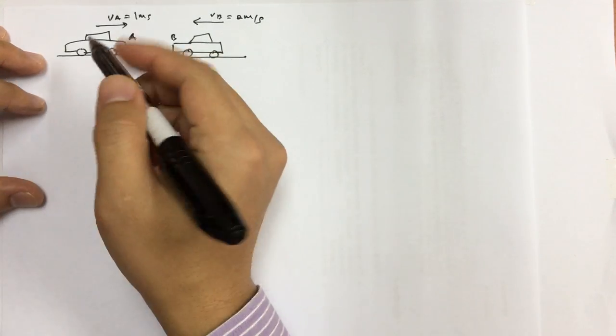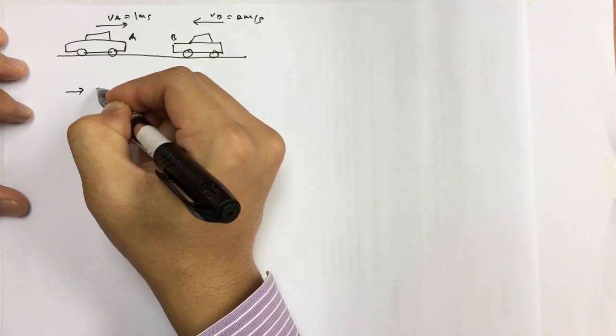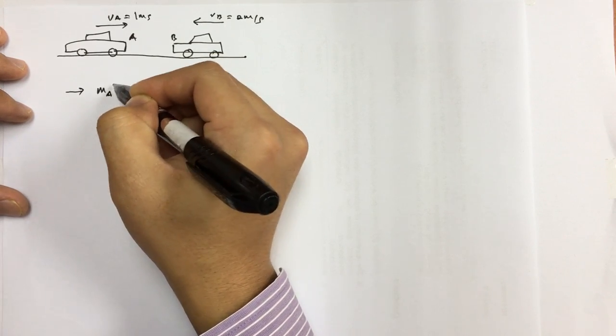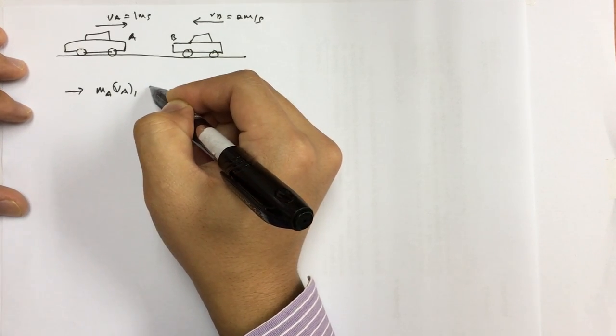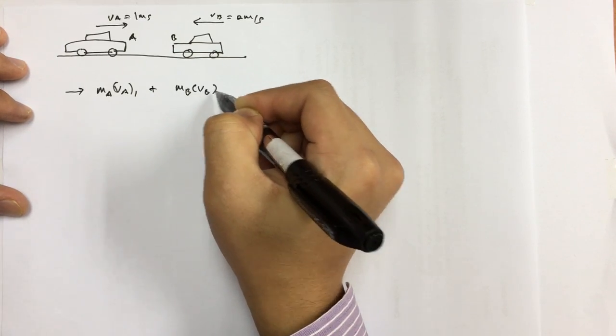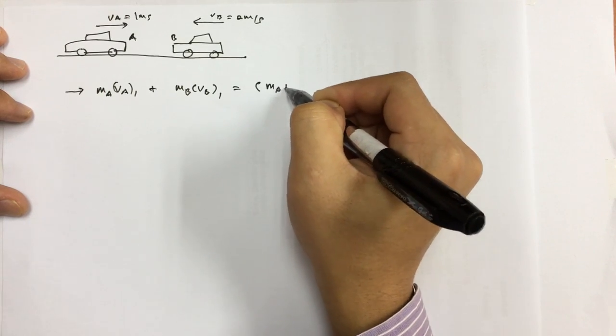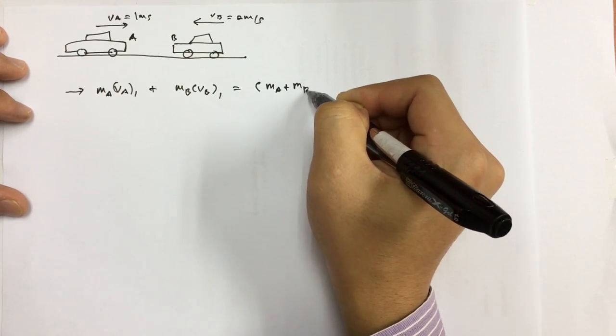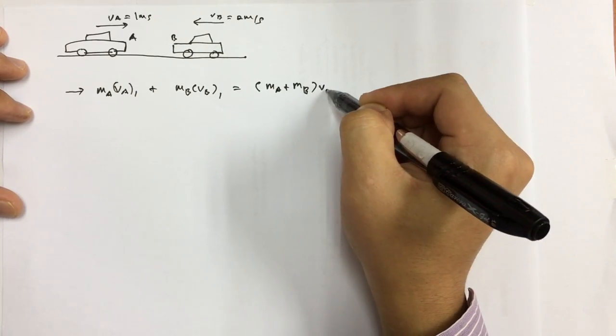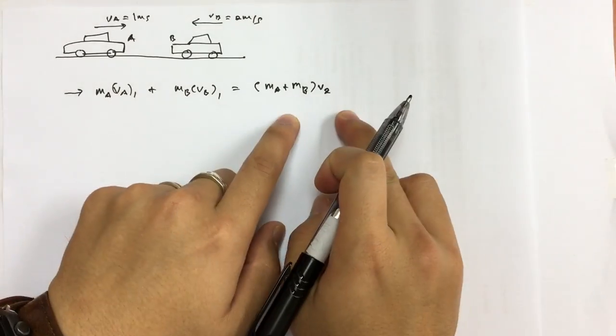It says that initially both are by themselves, and later after on they become entangled. So if we write the conservation of momentum equation, it will be like this: MA VA1 plus mass of car B VB1 equals, since both of them are entangled, both masses are going to be summed, and this is V2 before collision, after collision.